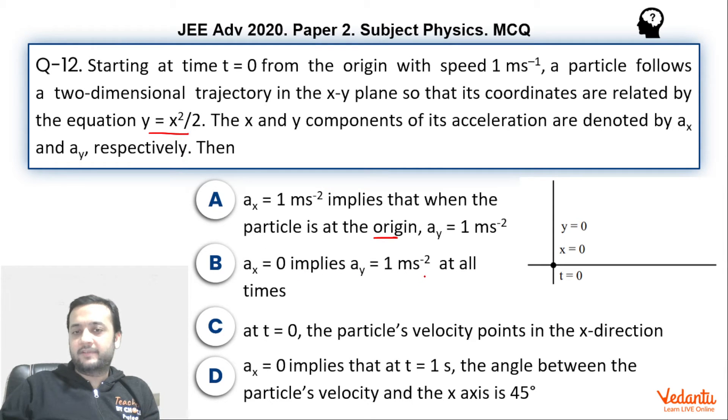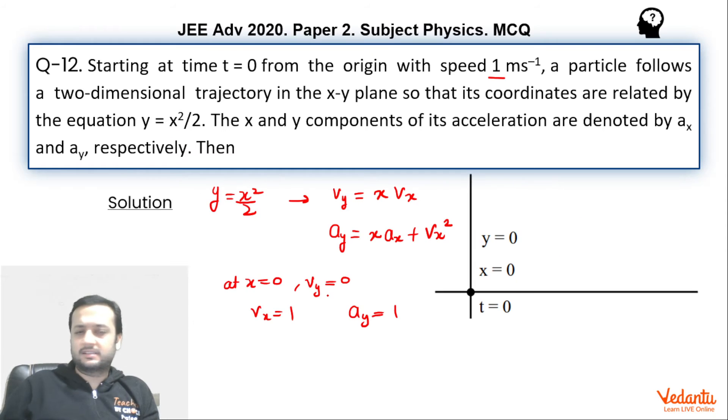ax equals to 0 implies ay equals to 1 at all times. This is perfectly fine. If you put ax equals to 0, which will imply vx is constant. We have already seen that at origin vx value is 1. So if vx is constant, that means vx will always be 1.